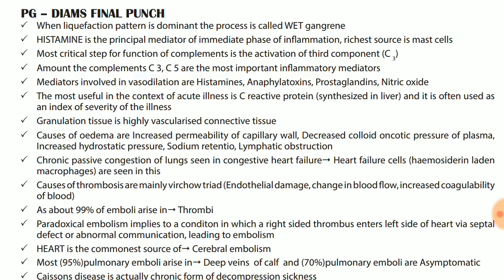Causes of thrombosis are mainly Virchow's triad: endothelial damage, increased coagulability, and change in blood flow. About 99% of emboli arise in thrombi. Paradoxical embolism implies a condition in which a right-sided thrombus enters the left side of the heart via septal defect, leading to embolism — it enters from right to left through a septal defect. About 95% of pulmonary emboli arise in deep veins of the calf, and 70% of pulmonary emboli are asymptomatic.